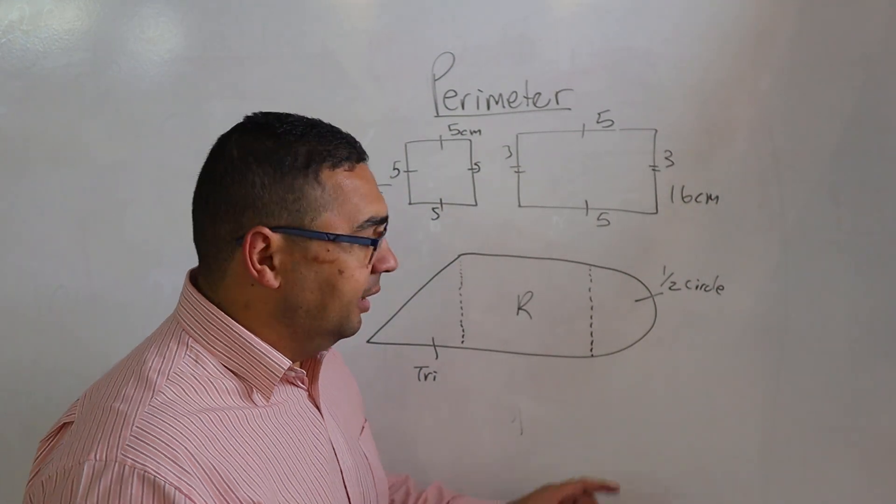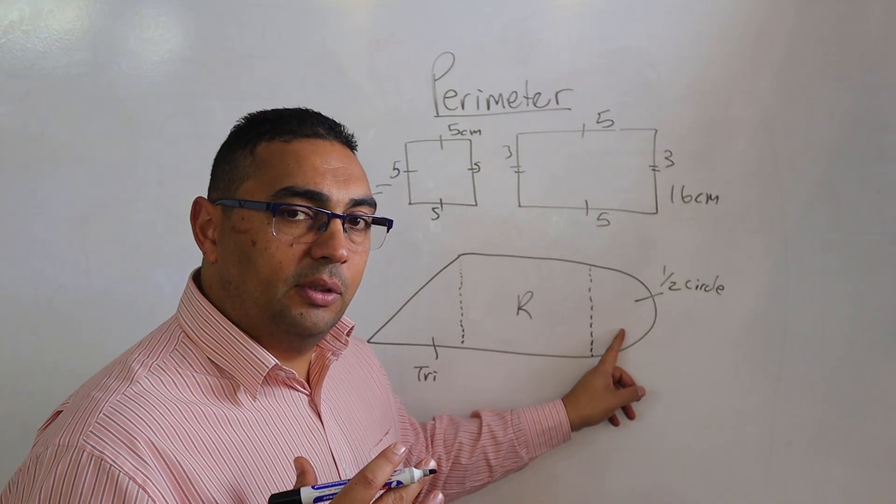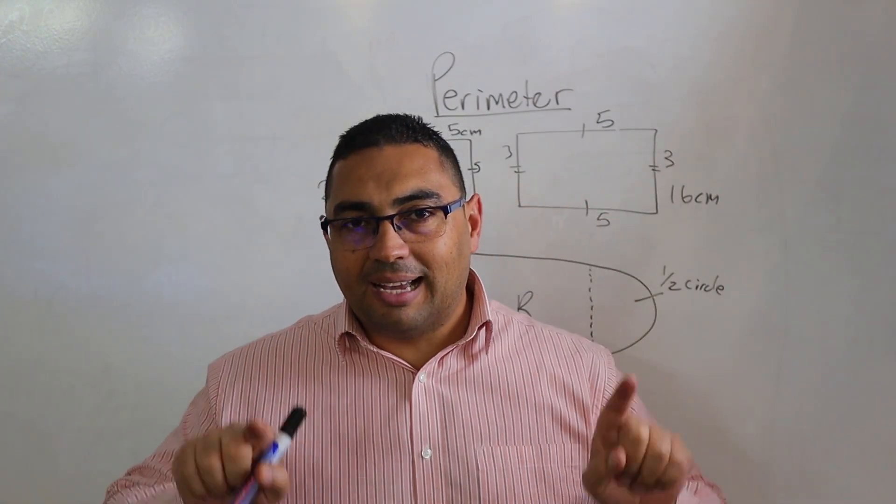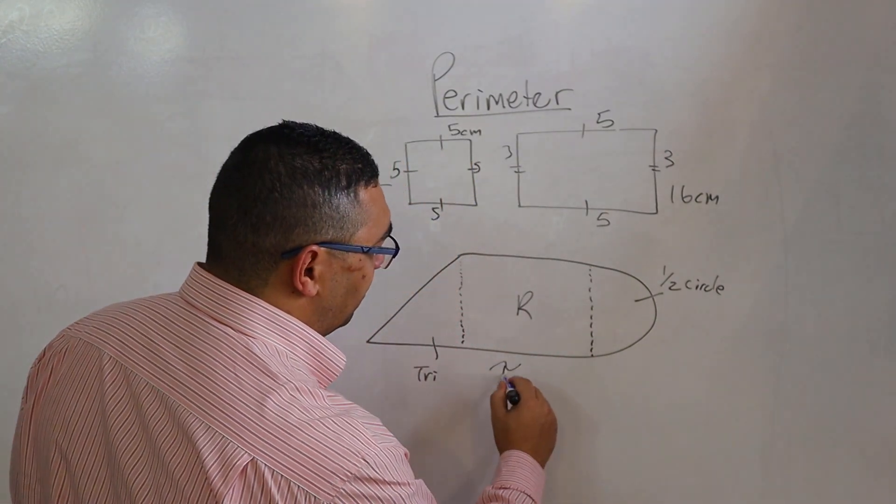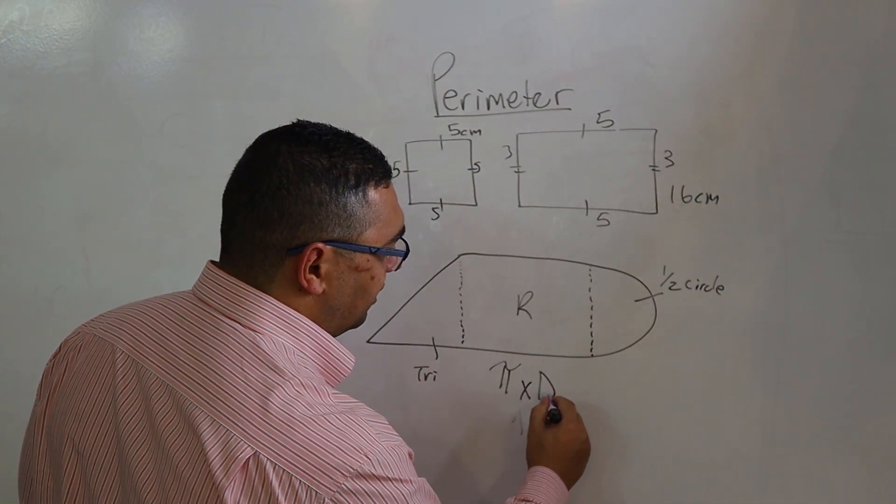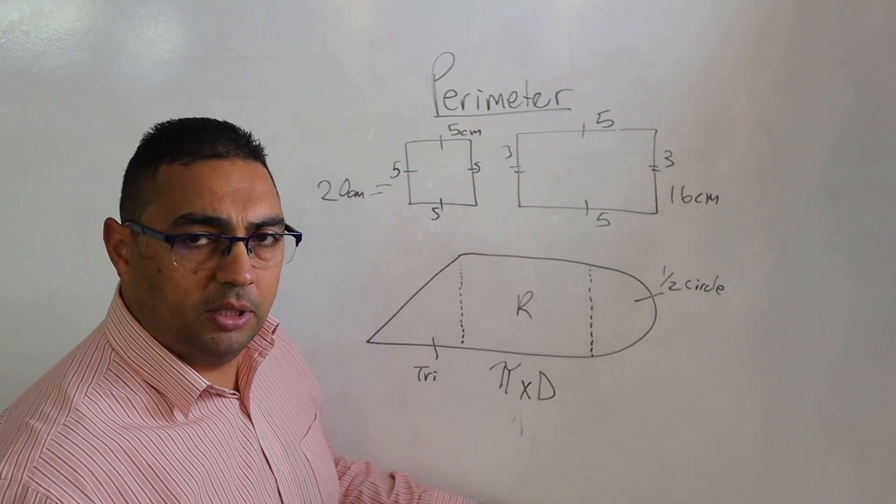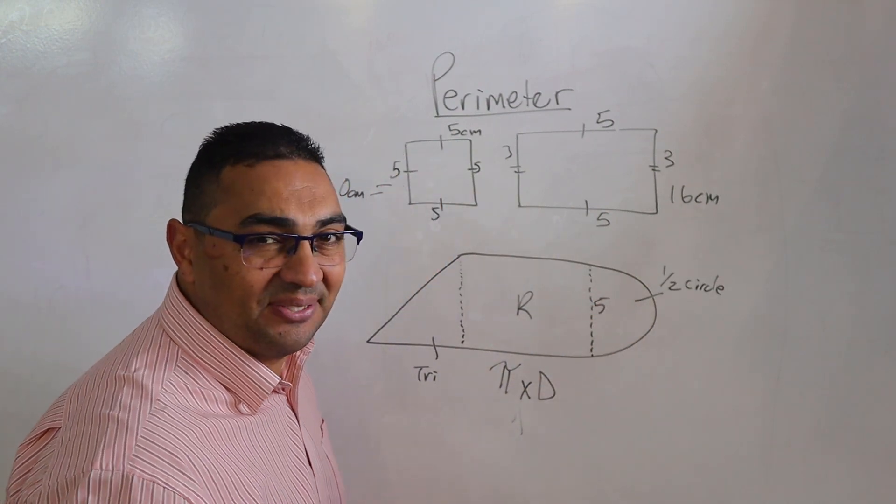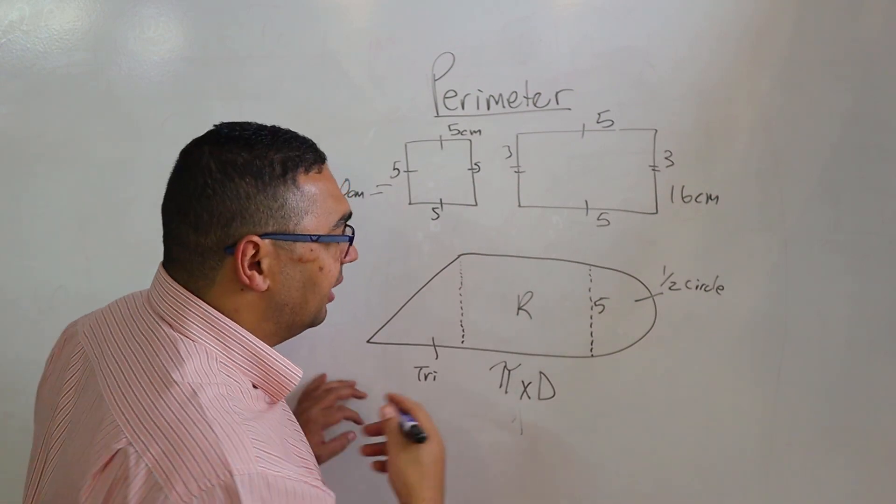Just also take note of the fact that when it comes to a circle and we want to work out the perimeter, we are talking now with a circle about the circumference. Okay, and in order to do that, what do we do? We are going to use pi times the diameter. Do we have the diameter? Yes we do. If this was, I'm just going to say five centimeters. I like this five centimeters. Is that the diameter?